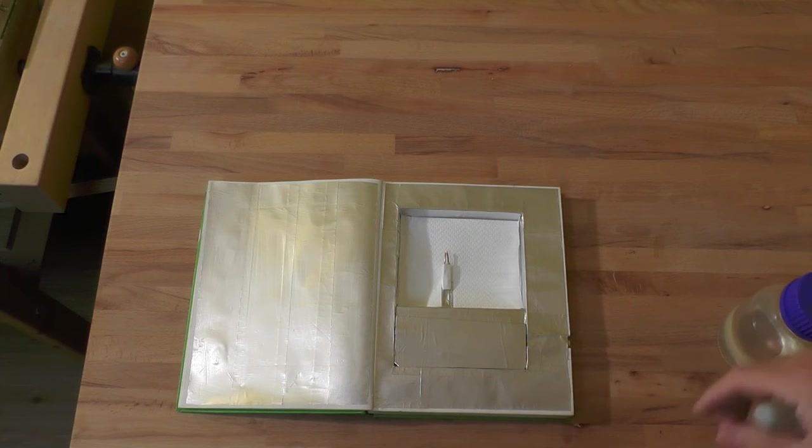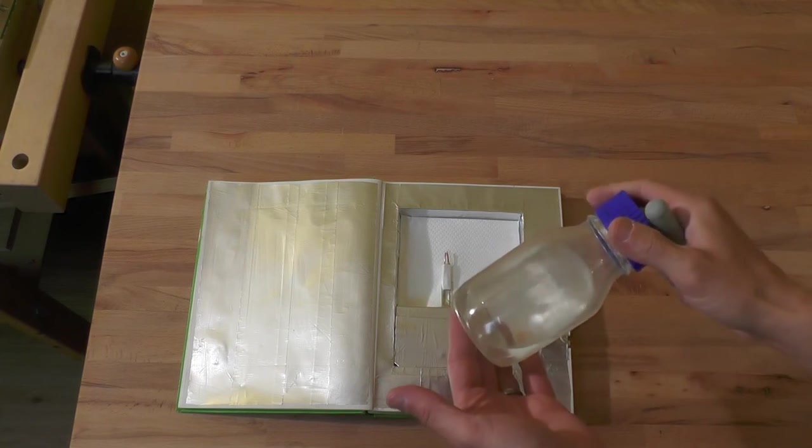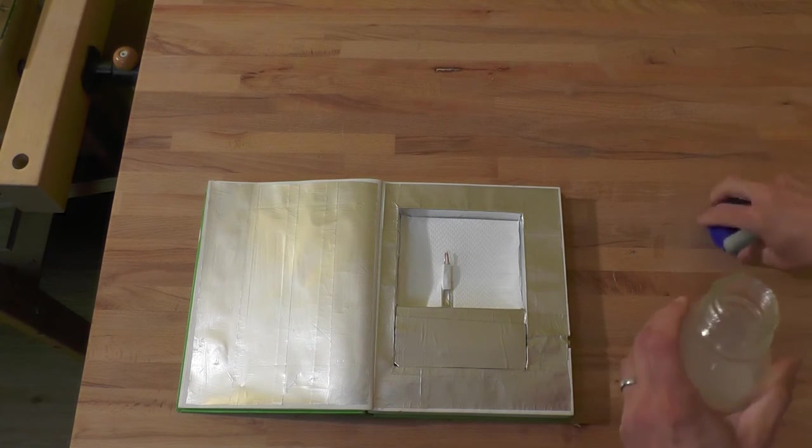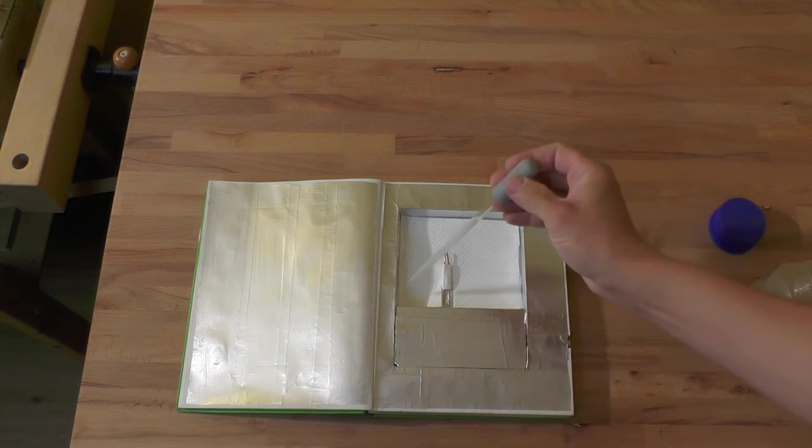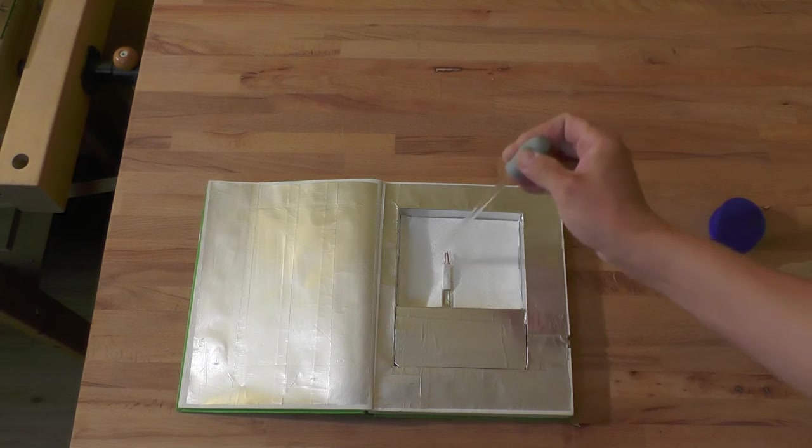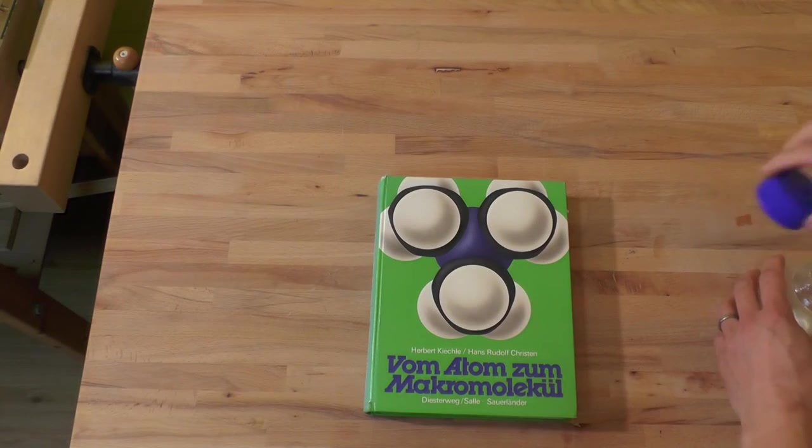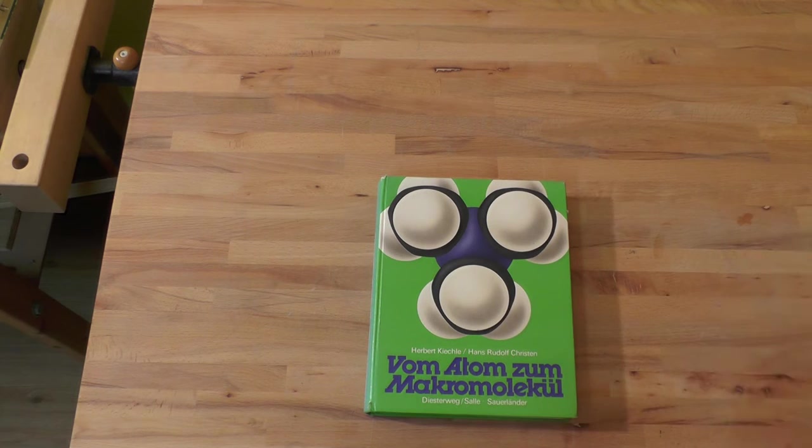The book is now ready to be tested. And because heptane and methanol do not mix, I need to shake it. And distribute one pipette of the mixture evenly on the household paper. And then I can close the book. You can leave the book like that without any problems for 10 to 15 minutes. And then show it to the audience.